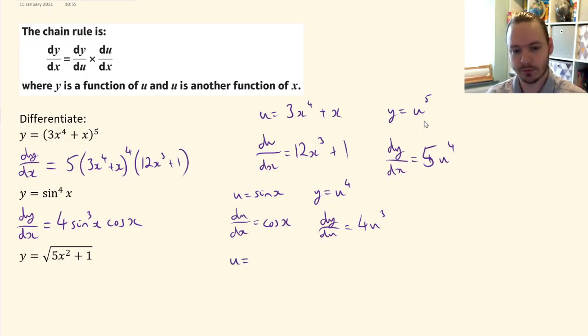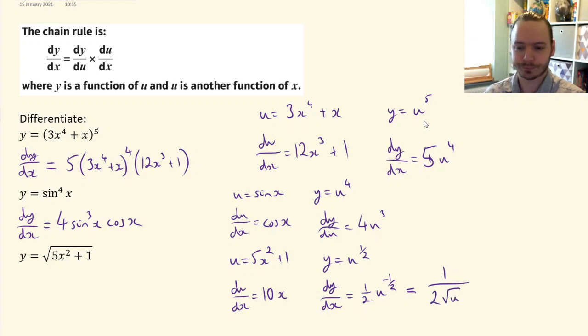For my final one, u is 5x^2 plus 1, which means y is u^(1/2). So du/dx is 10x, and dy/du is (1/2)u^(-1/2), which I'll rewrite as 1/(2√u). Therefore dy/dx is 1/(2√(5x^2 + 1)) multiplied by 10x, which simplifies to 10x/(2√(5x^2 + 1)).